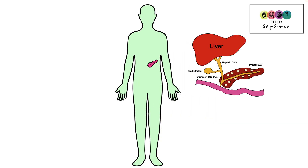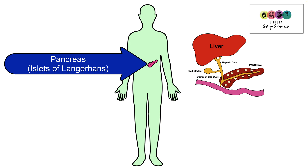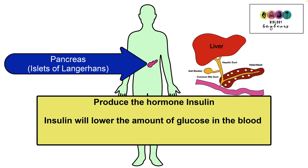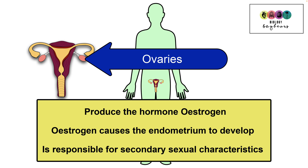Located in your abdominal cavity is the pancreas, which has particular cells known as the islets of Langerhans, and they produce the hormone insulin. Insulin is responsible for controlling your blood glucose levels — when you produce insulin it lowers the amount of glucose in your blood. Females have two ovaries and they produce the hormone oestrogen. Oestrogen causes the endometrium to develop — the lining of the uterus — and it's also responsible for the secondary sexual characteristics in females at puberty.